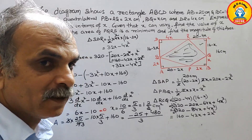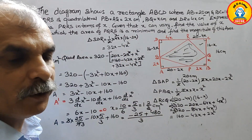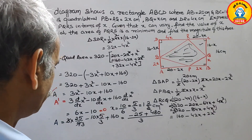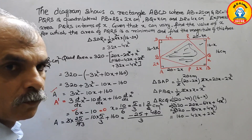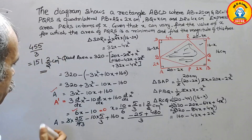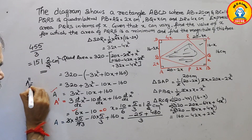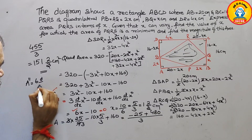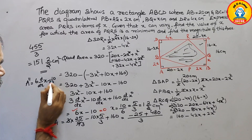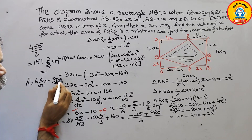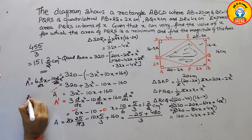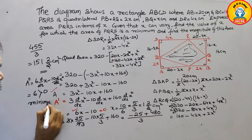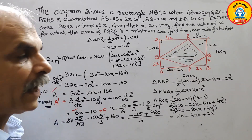To verify it is a minimum, we take the second derivative. A'' = d/dx of (6x minus 10) = 6. Since 6 is greater than 0, this confirms it is a minimum point.